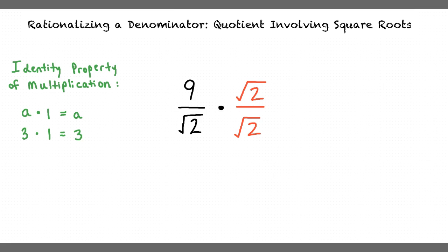Now we can multiply. Our expression becomes 9 times the square root of 2 over the square root of 2 times the square root of 2. 9 times the square root of 2 equals 9√2, and √2 times √2 equals 2.